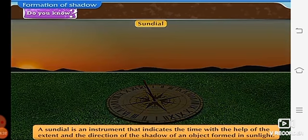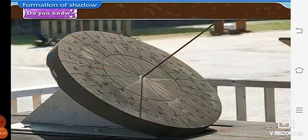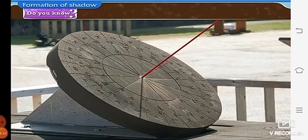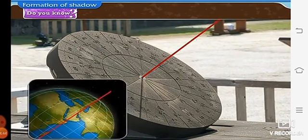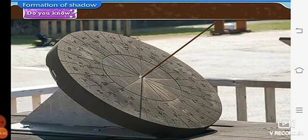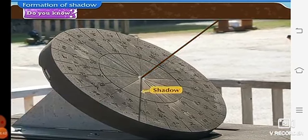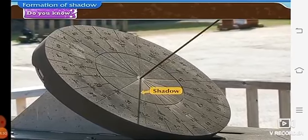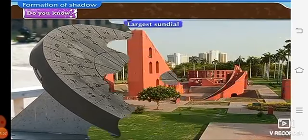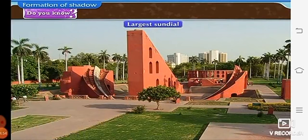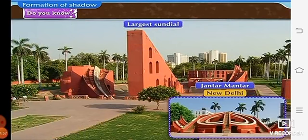Earlier, the time was measured by placing a stick parallel to the axis of the earth. By noting the position of its shadow on the dial at different times of the day. The largest sundial is at Jantar Mantar, New Delhi.